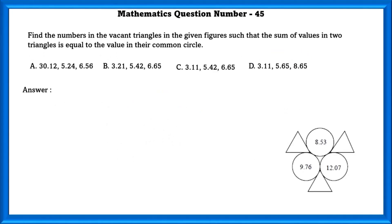Mathematics question number 45. Find the numbers in the vacant triangles in the given figure such that the sum of two values in two triangles is equal to the value in their common circle. The sum of the two triangles should be equal to the value in the common circles. So, if we take two triangles as 3.11 and 5.42 respectively, adding them we can get the value that is 8.53.